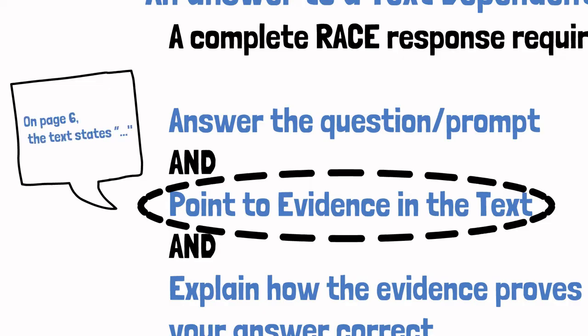The biggest difference between a regular question and a text-dependent analysis question is that a TDA question requires you to point to evidence in the text. Most often, that occurs by saying something like, on page blank, the text states blank. I know that might sound like a lot and it might be intimidating, but if you pay attention to this lesson video, you're going to learn the memory helper RACE, R-A-C-E, and that's going to make it pretty easy.